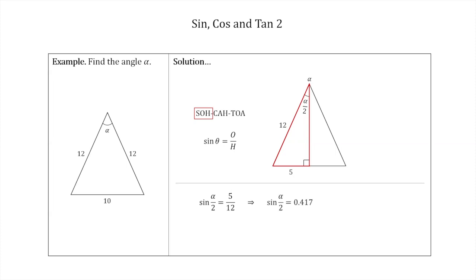Sine of alpha over two is about 0.417—I've just plugged 5 over 12 into a calculator. Now we want to get alpha by itself. We need to get the sine to the other side of the equation, so we take inverse sine of both sides.